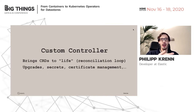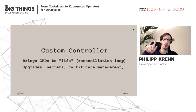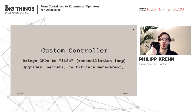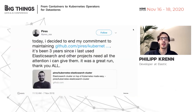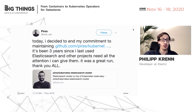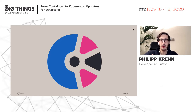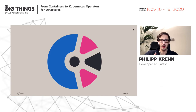What brings the custom resource definition to life is the reconciliation loop — basically an infinite loop that continuously runs in the background, always checking: what have you configured in your custom resource, what is your current running state, and how do I move the application to that desired state? It will do upgrades automatically, create secrets, and generate TLS certificates. A lot of that is fully automated. There used to be a community Kubernetes operator for Elasticsearch, but it was discontinued about two years ago, which is why we started our own operator at that time.